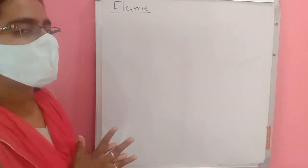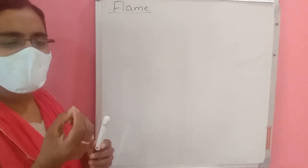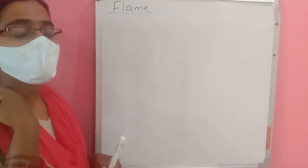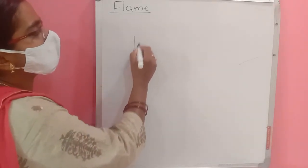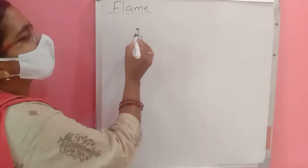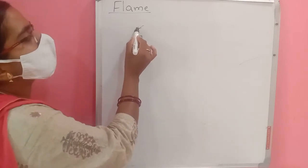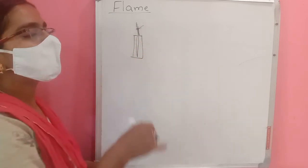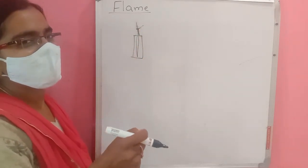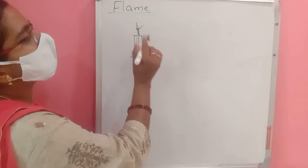Now, why do some materials produce a flame and others do not? A candle burns with a flame, but coal just glows without producing a flame. In a candle, the wax is vaporized by heat, moves through the wick, and evaporates into gas. Whenever a fuel turns into gas, it immediately catches fire and produces a visible flame.